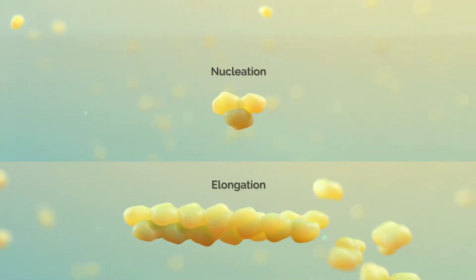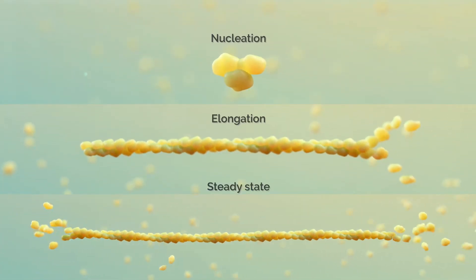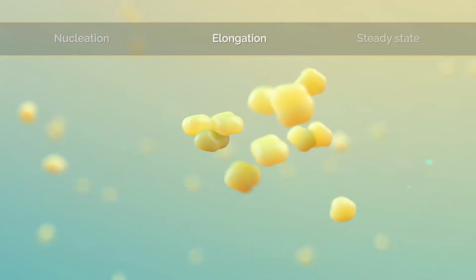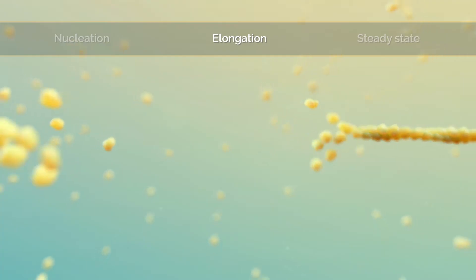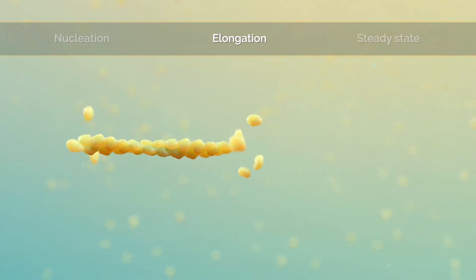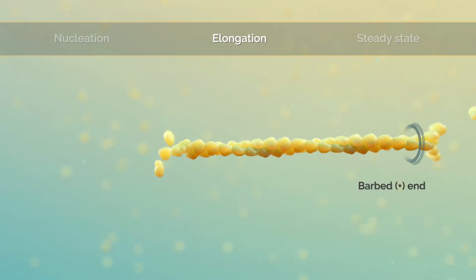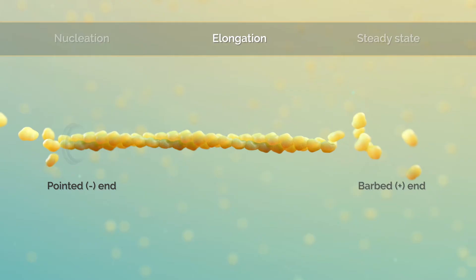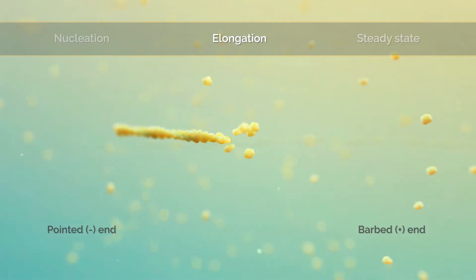Nucleation occurs as three ATP-bound G actin monomers form trimers. Then rapid linear polymerization occurs in a process called elongation. G actin binds reversibly to either end of the growing filament — known as the barbed or plus end, and the pointed or minus end — but monomers preferentially bind to the barbed end.